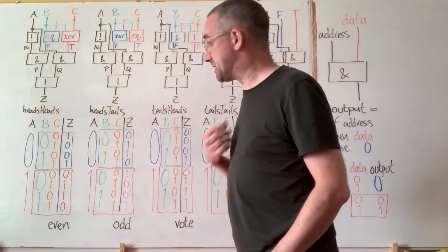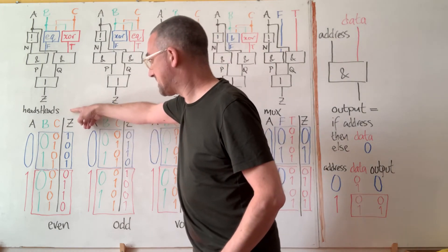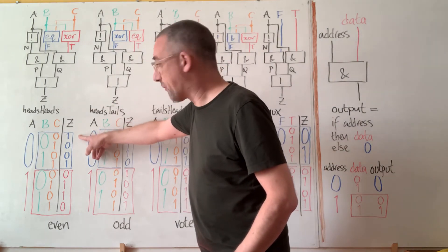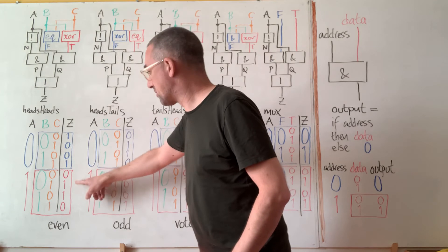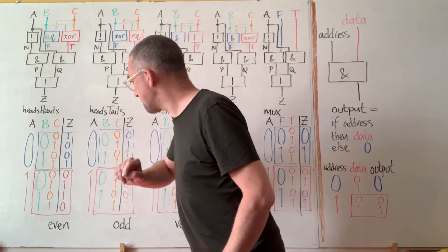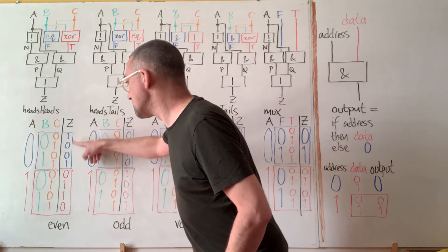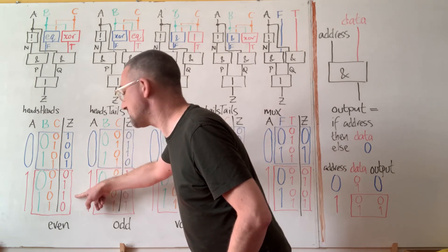Let's actually think about what these things do. Heads heads tells us if we're getting an even number of ones. You can see no ones, two ones, two ones, two ones.